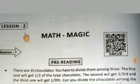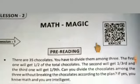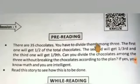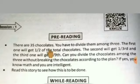Lesson 2: Math Magic. There are pre-reading questions. There are 35 chocolates and you have to divide them among three.